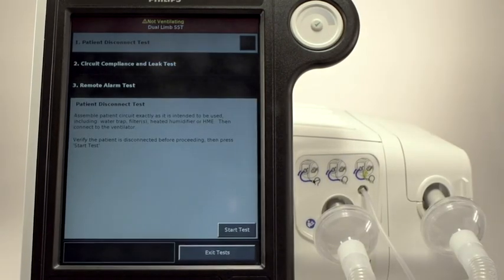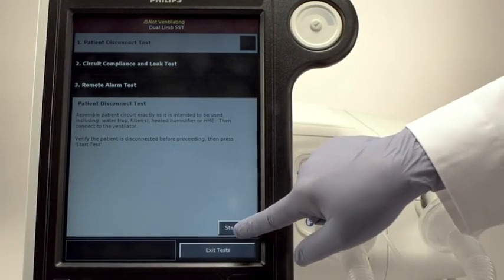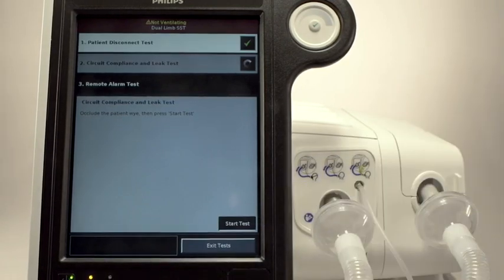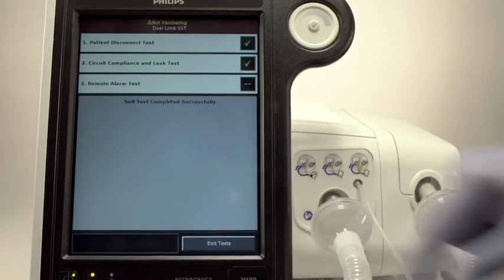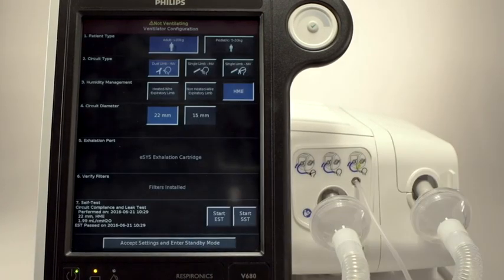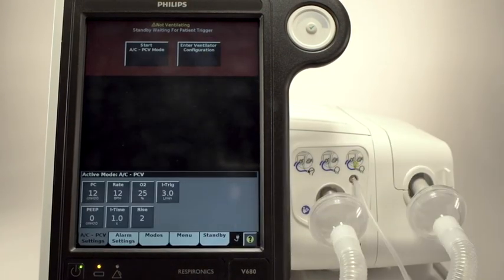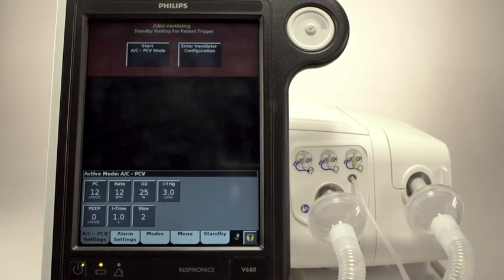Follow the prompts on the screen to guide you through the test. If there is a remote alarm in use, the functionality can be tested. If not, you can skip this test. Once everything checks out, touch Exit Tests. Then touch Accept Settings and Enter Standby Mode. Once again, we enter the Standby screen.